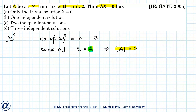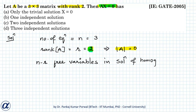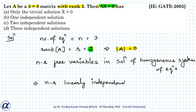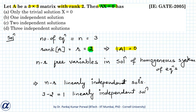When the determinant of A is 0 for a homogeneous system of equations, there are infinitely many non-trivial solutions. We can also say there are n minus r free variables in the solution, and n minus r linearly independent solutions. In this case, n is 3 and r is 2, so 3 minus 2 equals 1 linearly independent solution, meaning option B is correct.